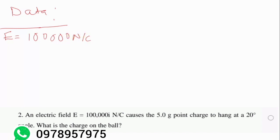Then what else do we have? We've got mass. So mass we can label it as M. M is equal to 5.0 g, which is also equal to 5 times 10 to the power negative 3 kg.